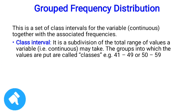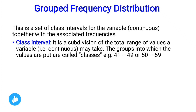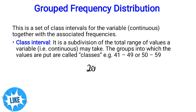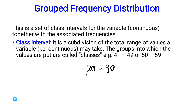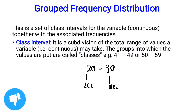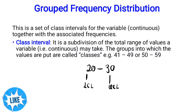The class interval 41 to 49 has a lower limit of 41 and an upper limit of 49. Likewise, 50 to 59 is also a class interval within a grouped frequency distribution, where 50 is the lower limit and 59 is the upper limit. Similarly, 20 to 30 is a class interval, where 20 is the lower class limit and 30 is the upper class limit.